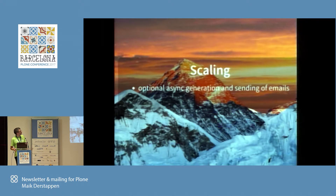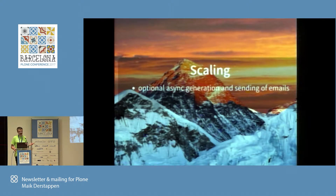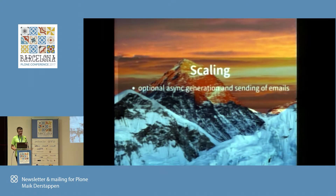We have some options to scale. We now have async support, which can work with Redis — under the hood it uses collective.taskqueue. If you have a large amount of emails, like 5,000 to create and send out, you probably want to use a separate process. Up to 1,000 is okay to do without, but it depends on your needs.